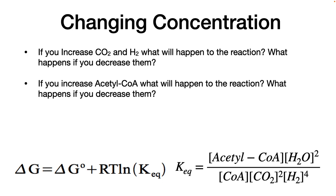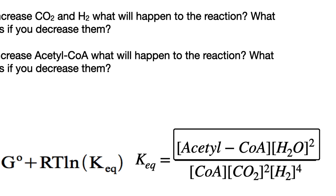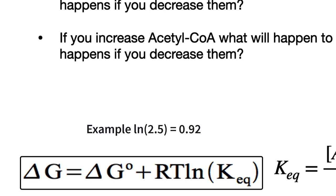Then, looking at the products of a reaction, it is the reverse. What happens if you increase acetyl-CoA? Increasing the concentrations of products increases K-equilibrium — making it more than one — which makes delta G more positive and less favorable. Decreasing products makes a reaction more favorable.